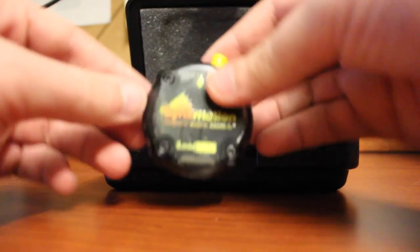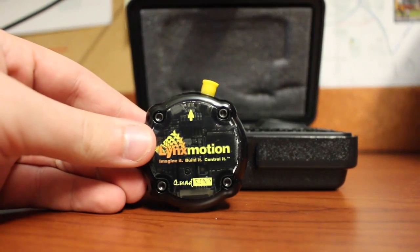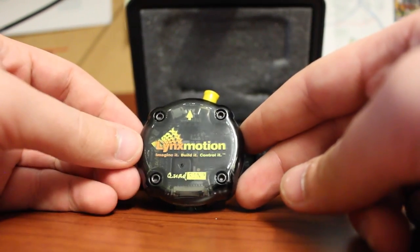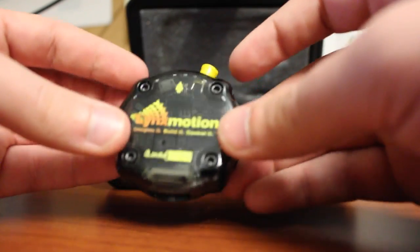So further into the box we get the flight controller itself. Just taking a quick look we see the front and the back here and then a bunch of different ports along the sides, but I'll get to that in a little bit.